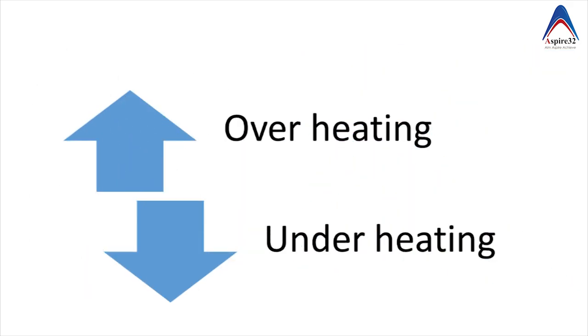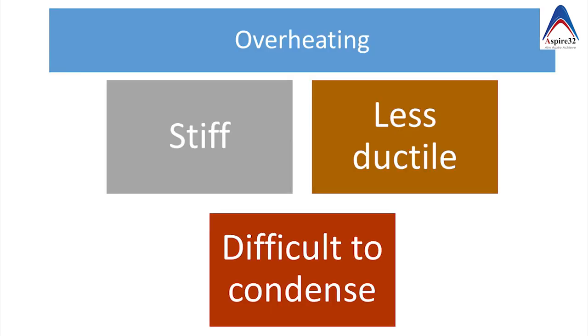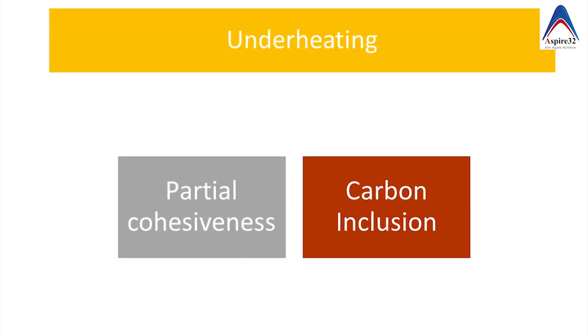Both overheating and under heating of the gold is bad for the properties of direct filling gold because overheating may make it stiff, less ductile and difficult to condense whereas under heating will make it partially cohesive or it may incorporate carbon from the flame.